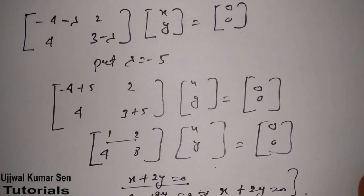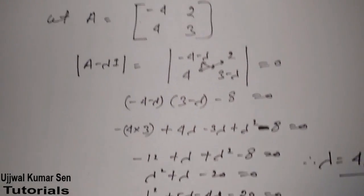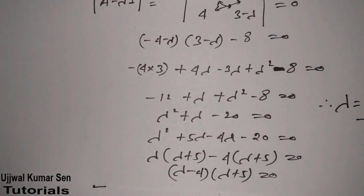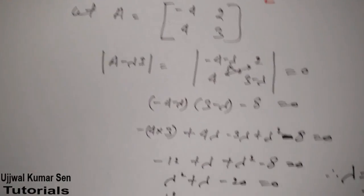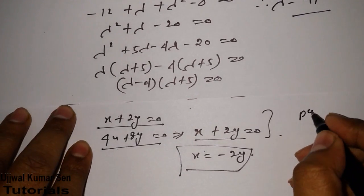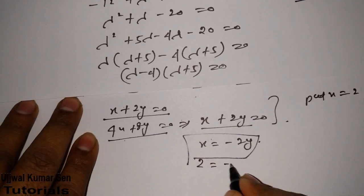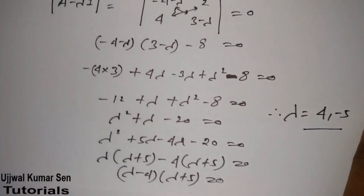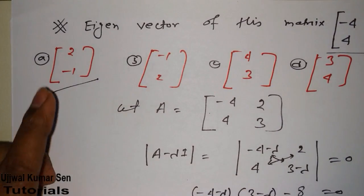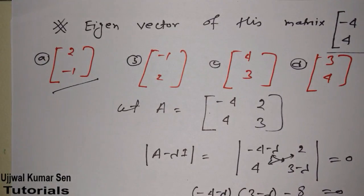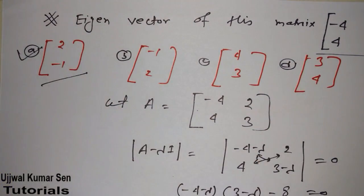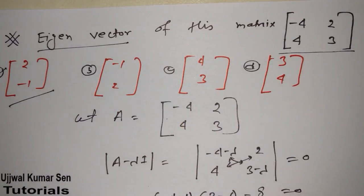Now let's check the answer options. Option one is [2, minus 1]. If x equals 2, then from x equals minus 2y we get y equals minus 1. Putting x equals 2 into the equation: 2 equals minus 2 times minus 1, which gives 2 equals 2. So the values in this option satisfy the eigenvector equation. This means option [2, minus 1] is the correct answer.